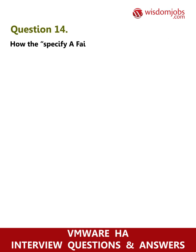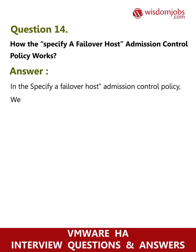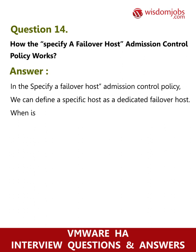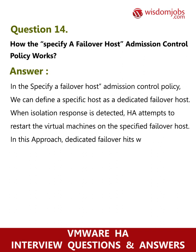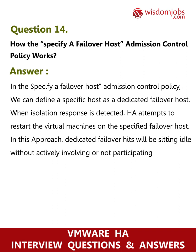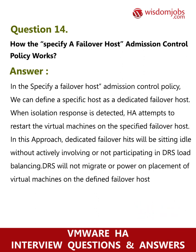Question 14: How does the specify a failover host admission control policy work? Answer: In the specify a failover host admission control policy, we can define a specific host as a dedicated failover host. When isolation response is detected, HA attempts to restart the virtual machines on the specified failover host. The dedicated failover host sits idle without participating in DRS load balancing — DRS will not migrate or power on virtual machines on the defined failover host.